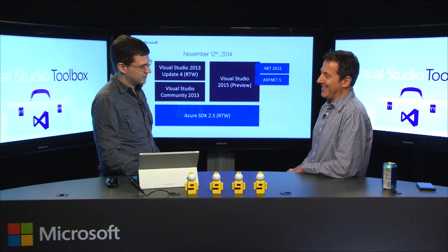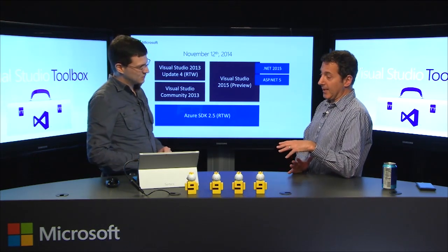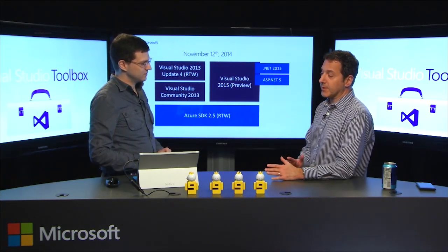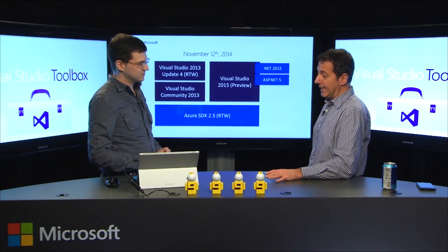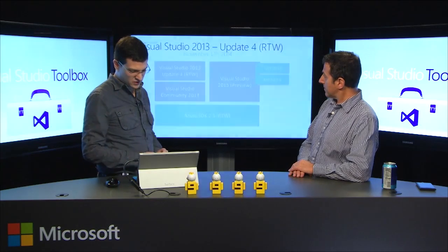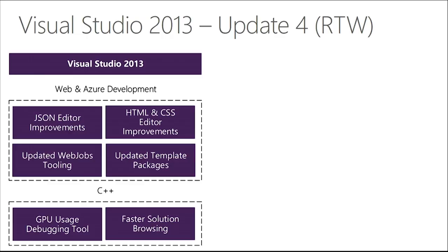For this show, we'll keep our focus on 2013 Update 4. Let's jump into the highlights. These include various elements for web and Azure developers built right into Update 4, so you don't need the Azure SDK for these features. If you install Update 4, you get improvements to the JSON editor. It's useful not just for web development - Azure Service Bus configuration, for example, uses a JSON file.